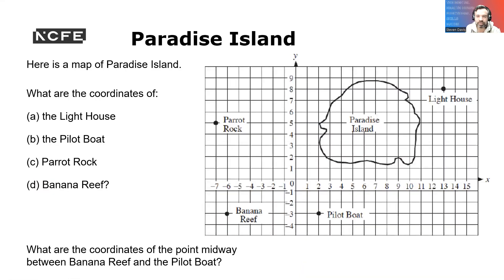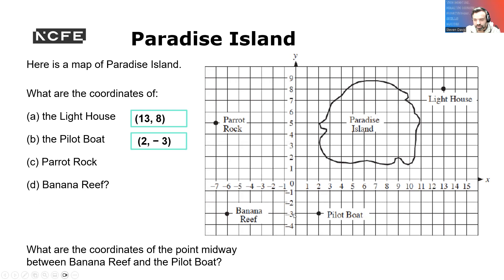So here is a map of Paradise Island. What are the coordinates of the lighthouse? Again, if we go along the corridor and up the stairs — good. If we plot the boat, we're going to go here and there — so along the corridor and then down the stairs. Parrot Rock: along the corridor and up the stairs there. And Banana Reef: we're going to go along the corridor and down. So we're either going along the corridor and up, or along the corridor and down.